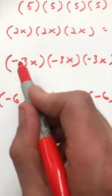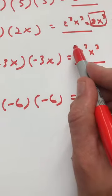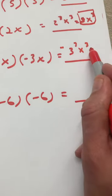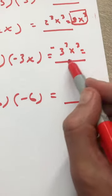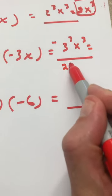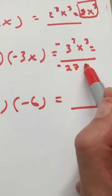But we have negative times negative, which is positive, times negative, so we attach a negative sign. 3 times 3 times 3 equals 27, so we get negative 27x to the third.